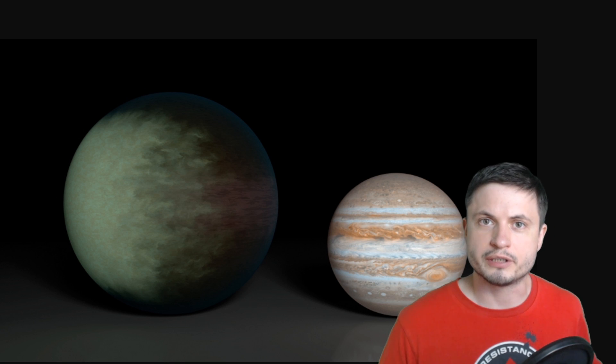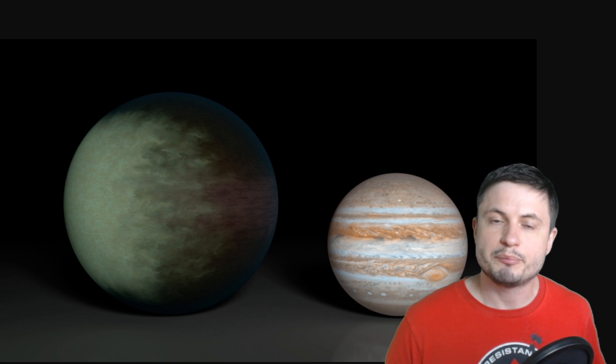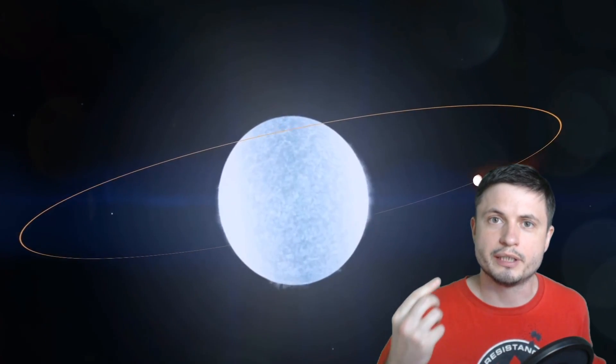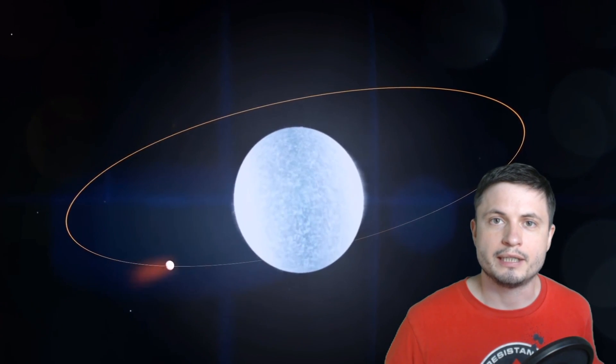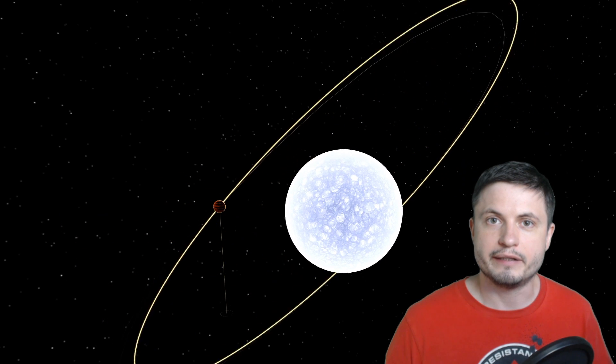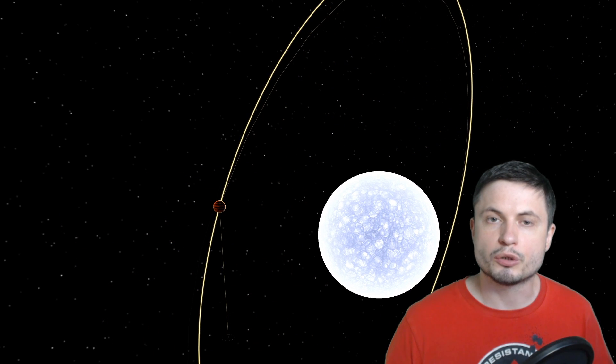But unlike other hot Jupiters and unlike other puffy planets, KELT-9b is also weird for one more important reason, and that reason is the orbit of the planet around the star itself. Unlike other planets it doesn't orbit in the equatorial region, it actually orbits in the polar region of the star. In other words, the orbital plane of this planet is inclined this way. It's a polar orbit object. And as of right now it's kind of difficult for us to explain what exactly caused this to be like this.